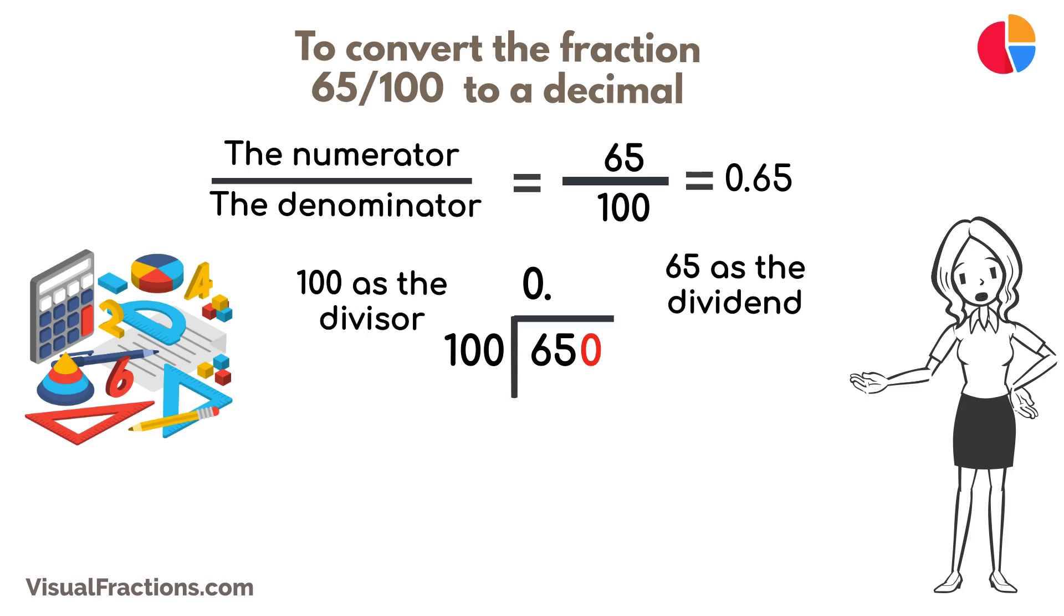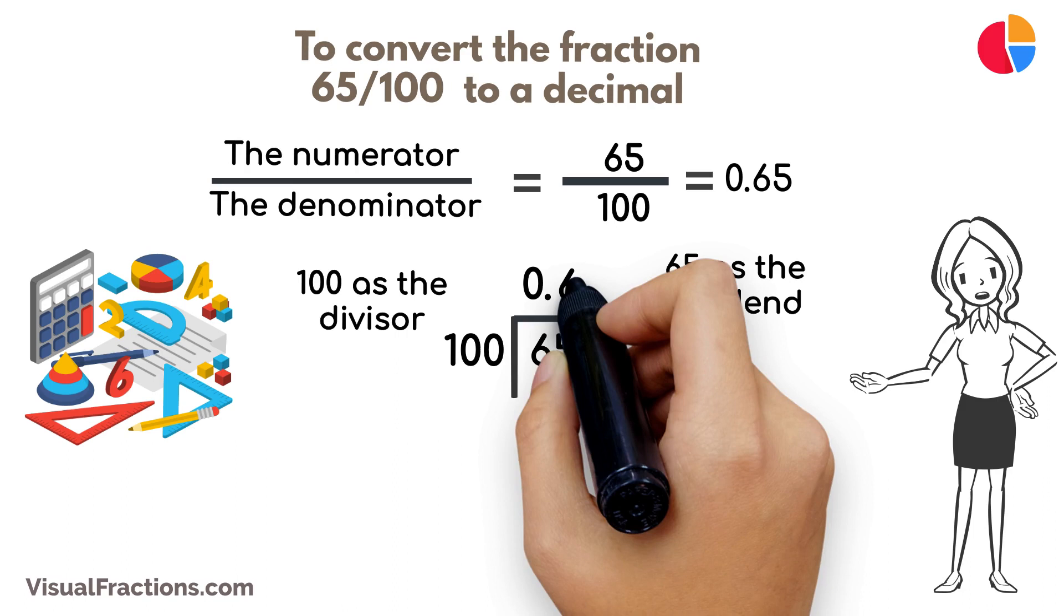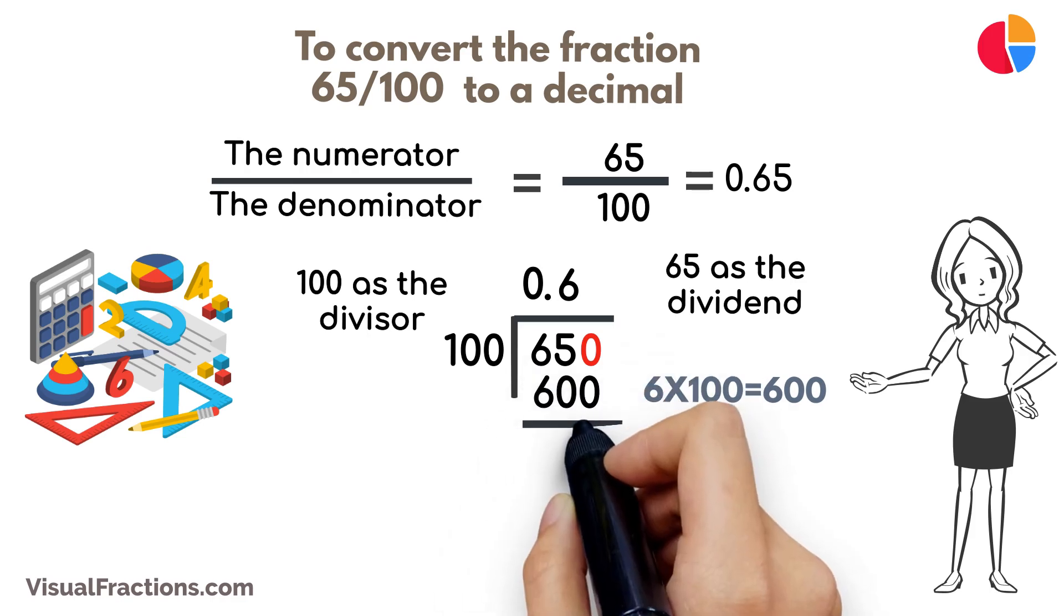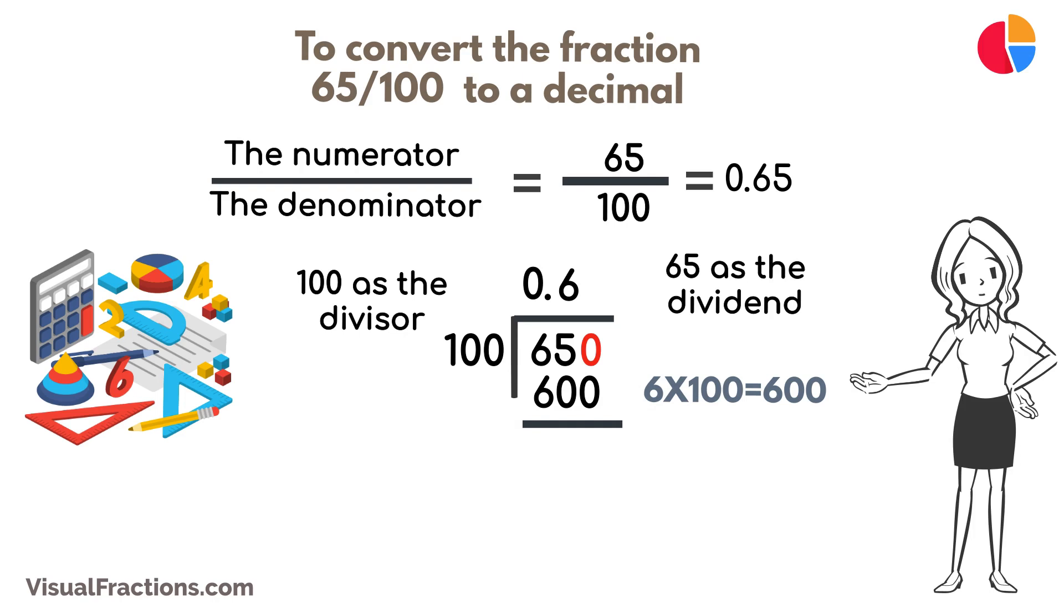How many times does 100 go into 650? Exactly 6 times. We write 6 after the decimal point in the quotient, making it 0.6. Multiplying 6 by 100 gives us 600. When we subtract 600 from 650, we get a remainder of 50.